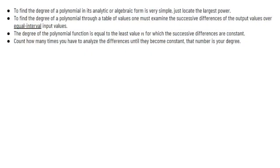To find the degree of a polynomial in its analytical algebraic form, it's pretty simple — you just locate the largest power; that's the degree of the polynomial. However, to find the degree of a polynomial through a table of values, one must examine the successive differences of the output values over equal interval input values.